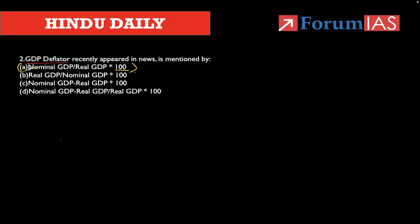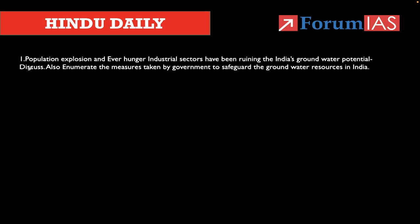Now let us discuss the mains question. 'The population explosion and an ever-growing industrial sector have been ruining India's groundwater potential. Discuss. Also enumerate the measures taken by the government to safeguard the groundwater resources in India.' In today's article we have seen certain measures for safeguarding groundwater conservation that you can enumerate here. The first part is a general topic you can write on your own — the population explosion and the industrial sectors, how they have been ruining the groundwater potential. Just try it. Let me catch you in tomorrow's analysis. Thank you for your patience. Bye.